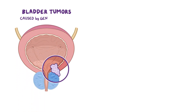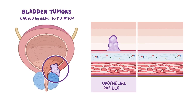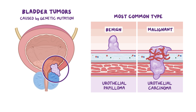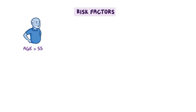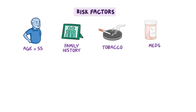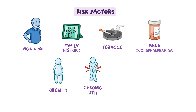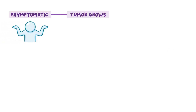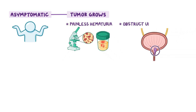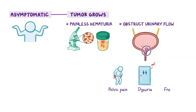As a quick recap: bladder tumors are growths from the bladder wall typically caused by a genetic mutation. Urothelial papilloma is the most common benign bladder tumor, while urothelial carcinoma is the most common malignant type. Risk factors include being over 55 years of age, family history of bladder tumors, exposure to toxins like tobacco or cyclophosphamide, obesity, and chronic urinary tract infections or recurrent kidney stones. Clients are typically asymptomatic initially, but over time may experience painless hematuria, obstructed urinary flow, pelvic pain, dysuria, and frequent and urgent urination.